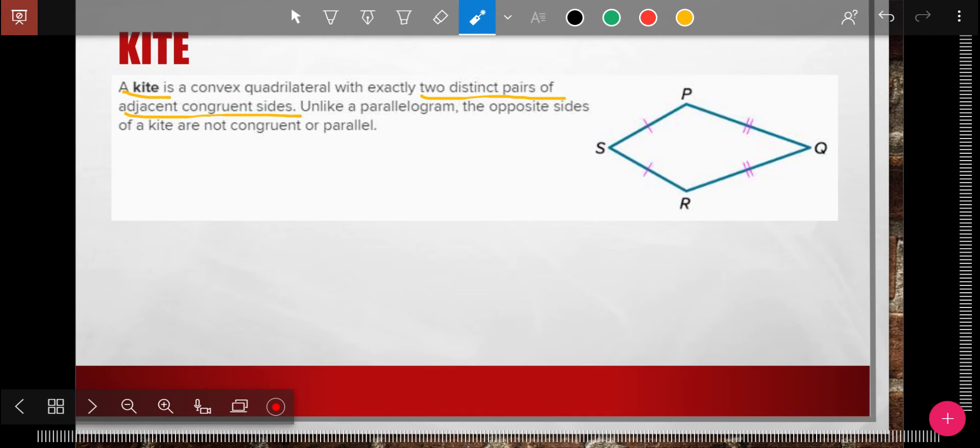These two are congruent, and these two are congruent, but not necessarily all four, right? Not necessarily all four are congruent.